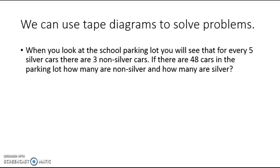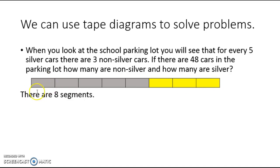I'm going to use a tape diagram to help me. First things first, I need to draw my tape diagram. You can see that these gray ones right here represent the silver cars, and these are the non-silver cars. Now, I know that there are eight segments, because five plus three is eight. So I need to draw eight segments in my tape diagram.